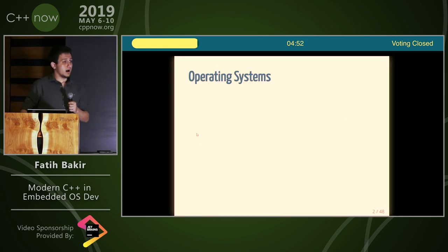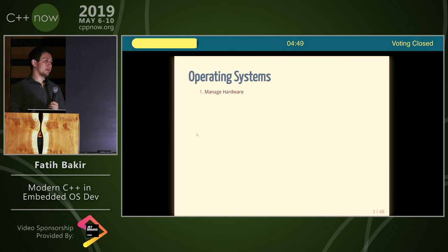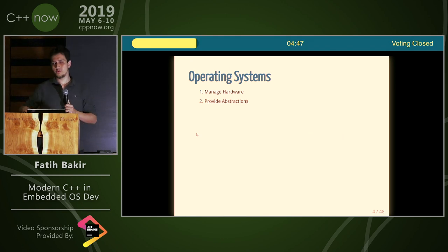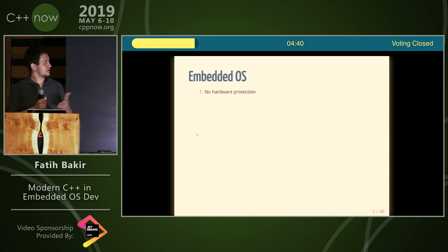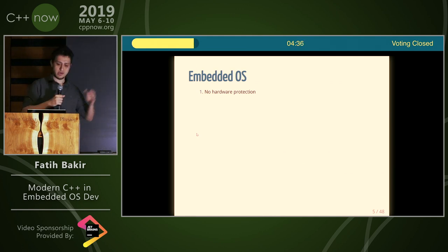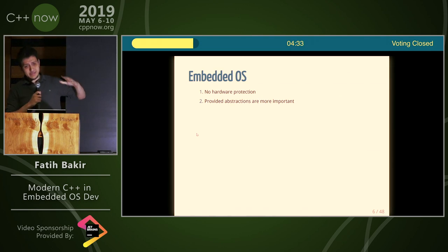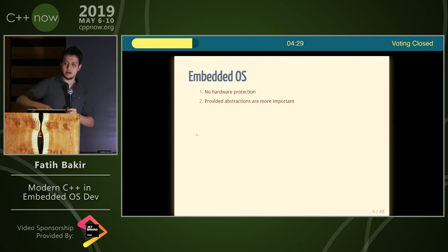I'm going to be quick. An operating system is basically responsible for managing hardware and also providing abstractions. Like, your operating systems do these two things, but I'm working on an embedded system, so there's no real hardware protection — I can't really manage the hardware. You can work around me and whatever. So I think in this domain, providing good abstractions is more important than the other aspect of an operating system.